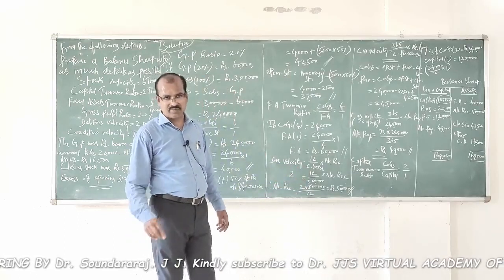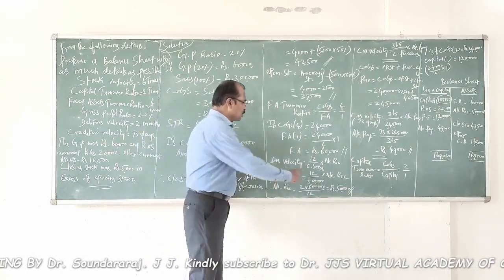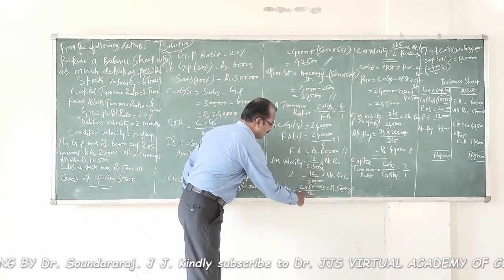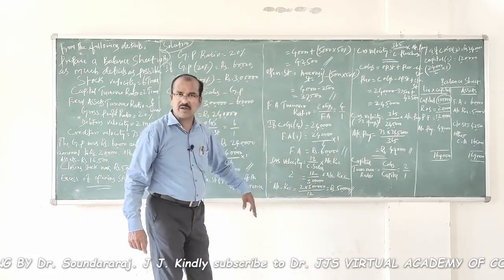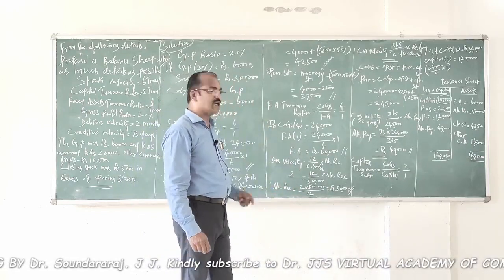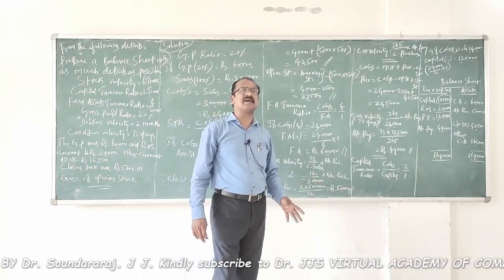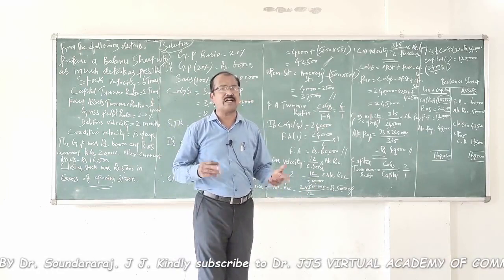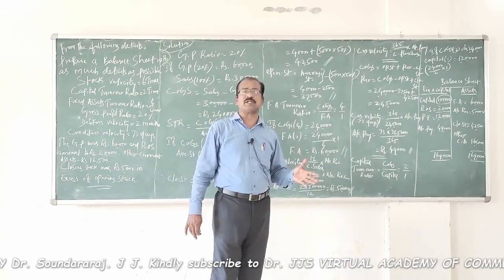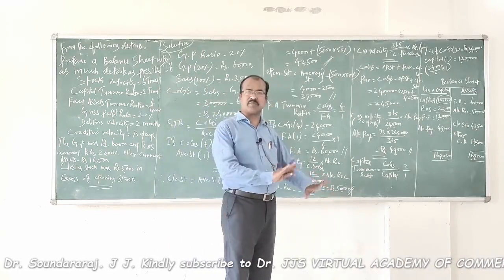Debtors velocity of 2 months = 12 ÷ 3,00,000 × Accounts Receivable. Using cross multiplication: Accounts Receivable = 2 × 3,00,000 ÷ 12 = 50,000 rupees. We cannot split this 50,000 into debtors and bills receivable as there is no adequate information about the proportion between them, so keep it as accounts receivable.